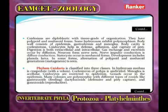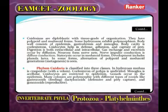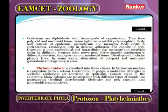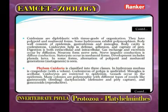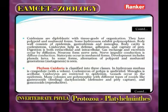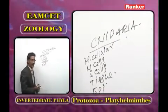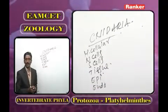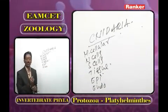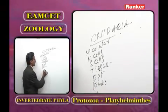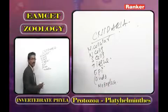In Cnidaria, organs, organ systems, and coelom are absent. The outer layer is epidermis and the inner layer is endodermis (gastrodermis). Between them is a gelatinous substance called mesoglia, which may be cellular or acellular.